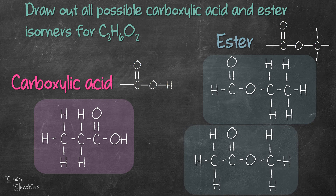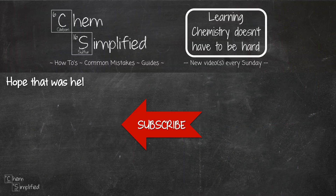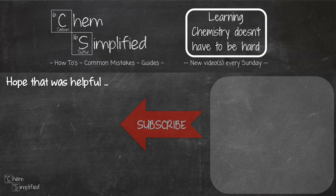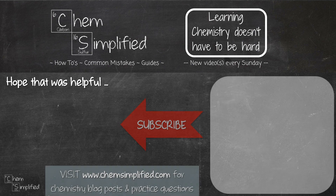We got one carboxylic acid and two esters. If you're interested in drawing other isomers for C3H6O2 that are not carboxylic acid or ester, let me know in the comments and I'll post a video for it. I hope the video was helpful. Do subscribe and thanks for watching.